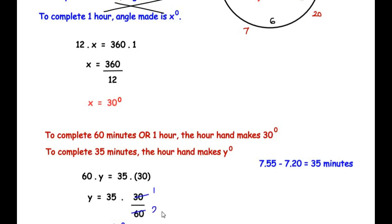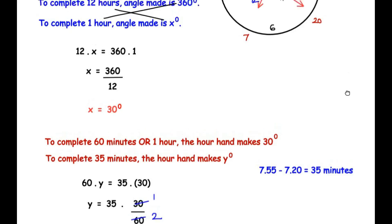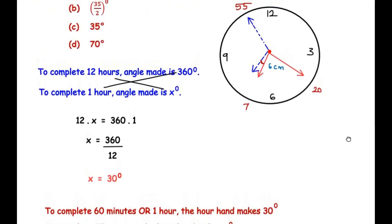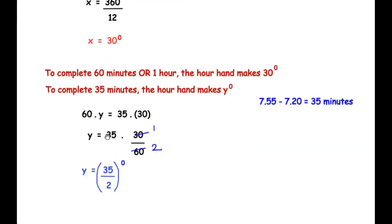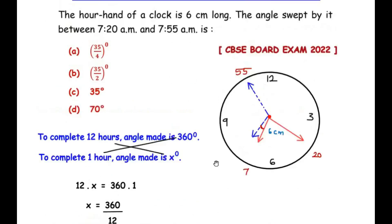So the angle made by the hour hand to move from 7:20 AM to 7:55 AM is 35 over 2 degrees, that is 35 in the numerator and 2 in the denominator. Let us see if 35 over 2 is in the options above. Here we have option B, so this is our answer.